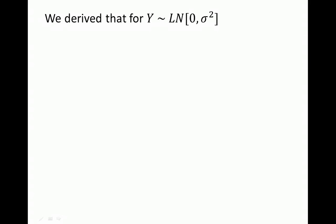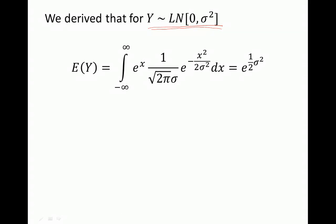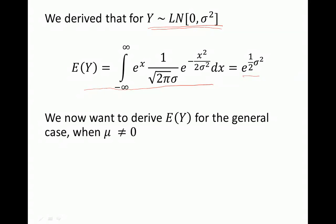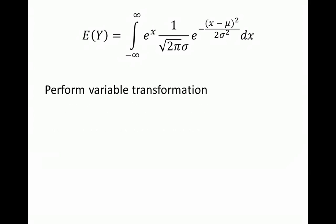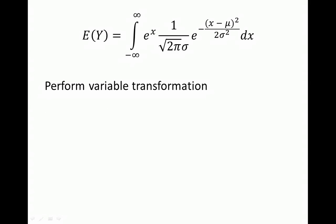Remember, we set mu equal to 0, so y is log-normally distributed with mu equal to 0 and variance sigma squared. We just computed that in this case the expectation of y equals e to the power of one half times sigma squared. But we were interested in the general case — computing the expectation of y when y is log-normally distributed with mean mu and variance sigma squared, so we don't want to restrict the mean to 0. We can do this by performing a variable transformation.